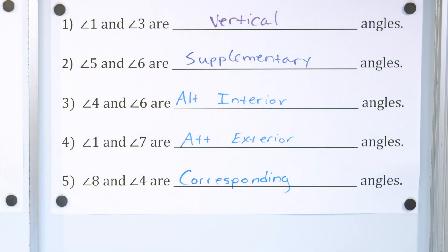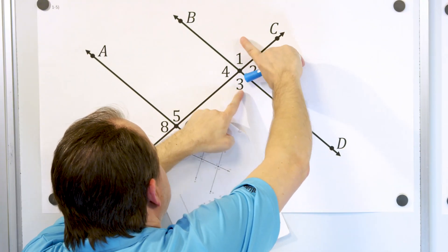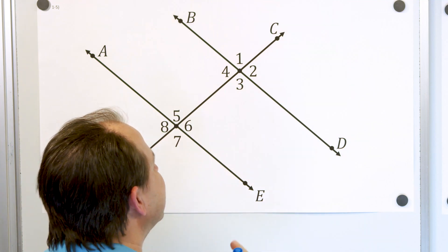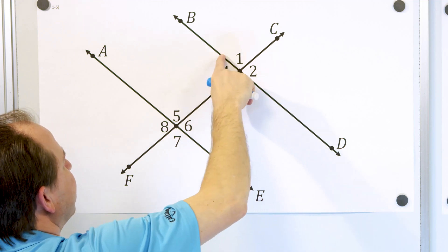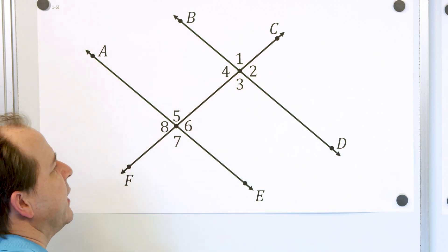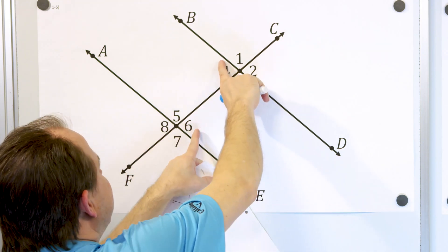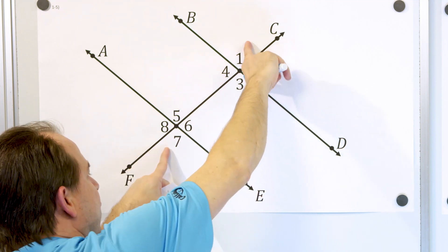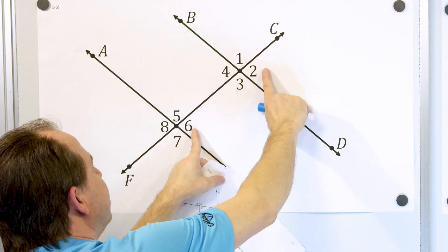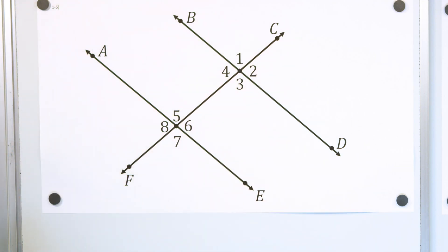We've done a good job with definitions. Vertical angles are on opposite sides of an intersection. Supplementary angles add up to 180 degrees. Alternate interior angles are on the inside and on alternate sides. Alternate exterior angles are on the outside and alternate. Corresponding angles are in the same positions. Remember these — we have a few more problems in this lesson.